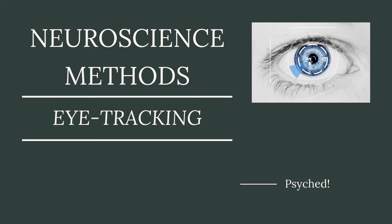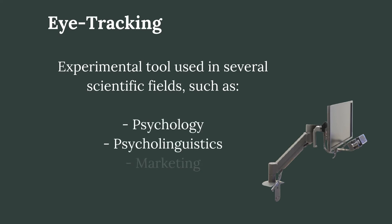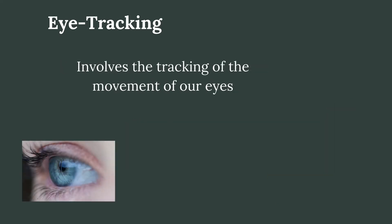Hello everyone and welcome back to another episode of Neuroscience Methods. In today's episode we're going to talk about eye tracking. Eye tracking is an experimental tool that is used in several different scientific fields such as psychology, psycholinguistics, or marketing. As the name implies, eye tracking involves the tracking of the movements of our eyes.